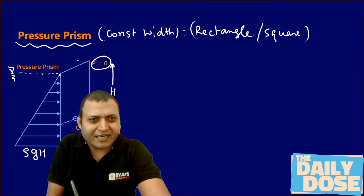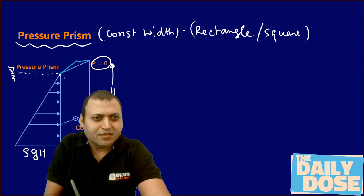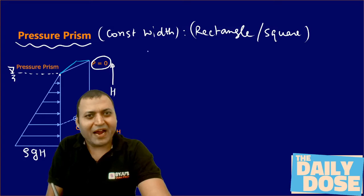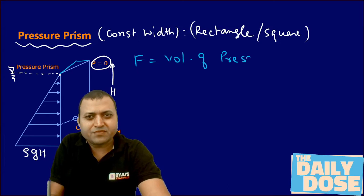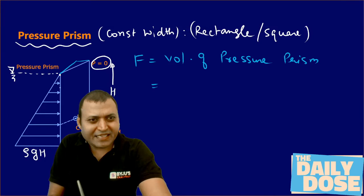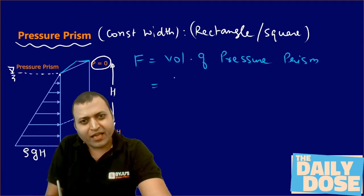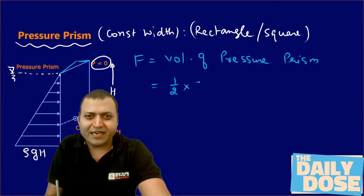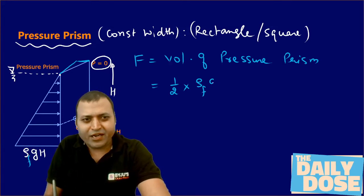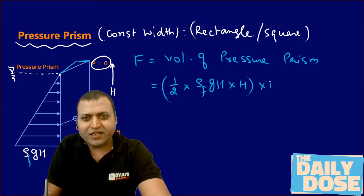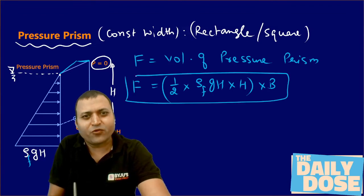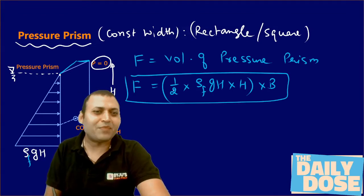This triangular shape is the pressure prism. To find the hydrostatic force, we find the volume of the pressure prism. The area of the triangle is half into base — that is rho-fluid into g into h — multiplied by height capital H, into width of the surface. That gives the magnitude of hydrostatic force acting on the vertical plane surface kept in static fluid.